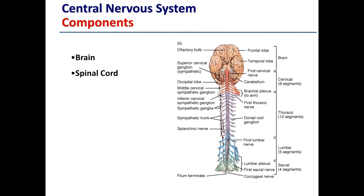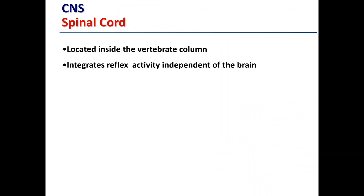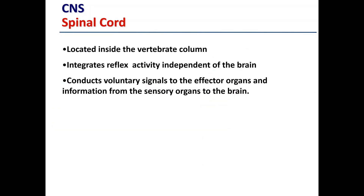Now we're going to take a different approach and look at the central nervous system and then the peripheral nervous system. The central nervous system consists of both the brain and the spinal cord. The spinal cord is located inside the vertebral column and it integrates reflex activity independent of the brain.